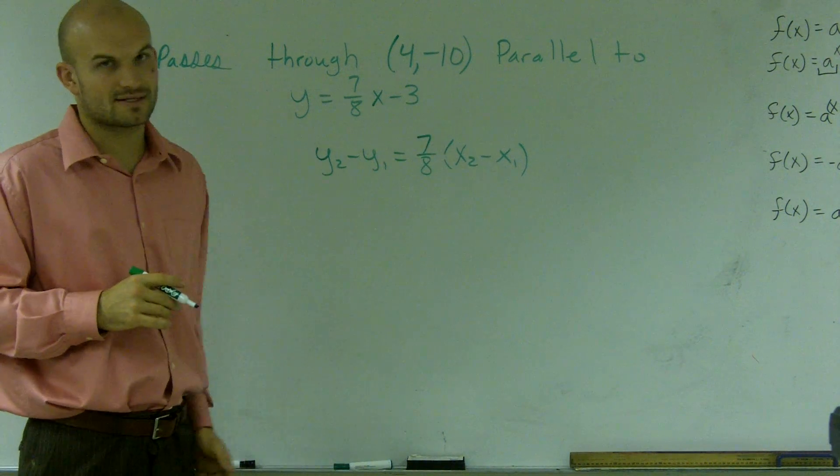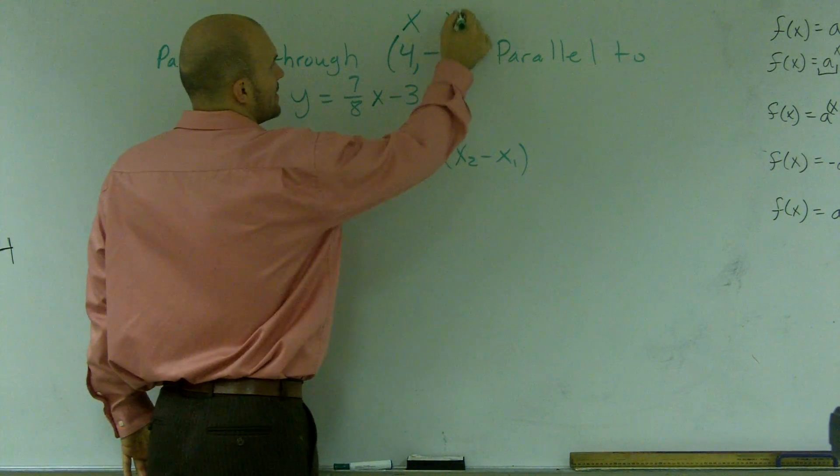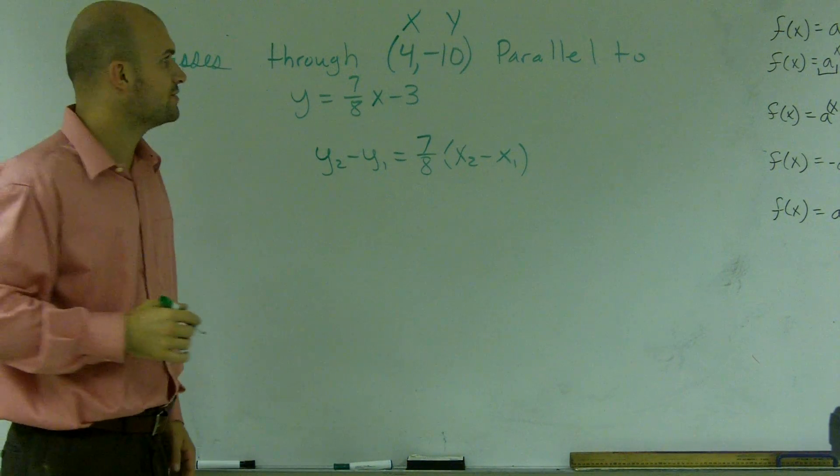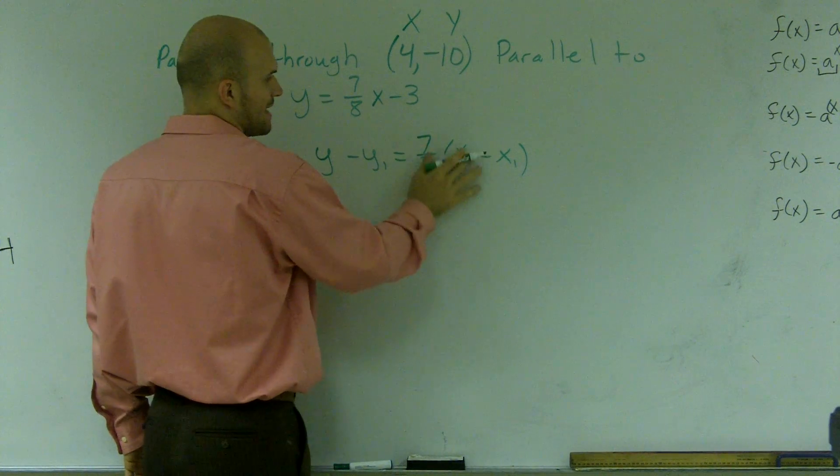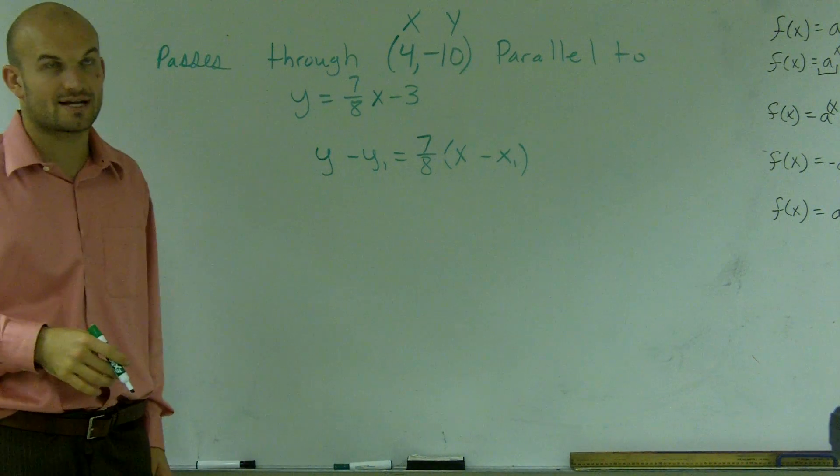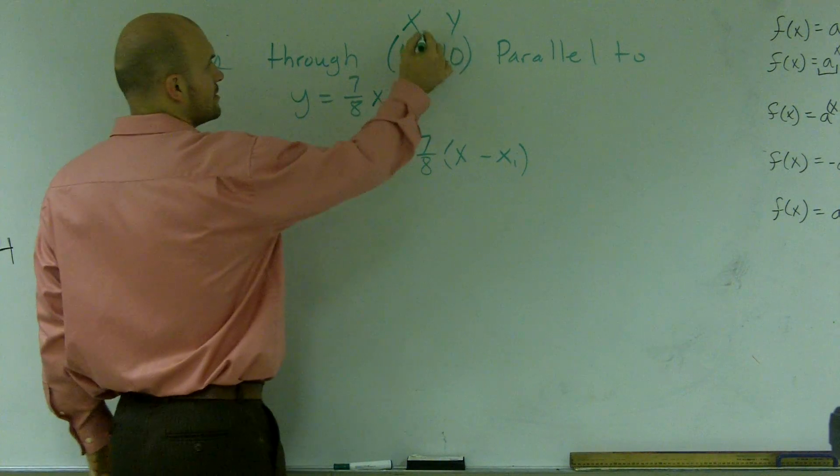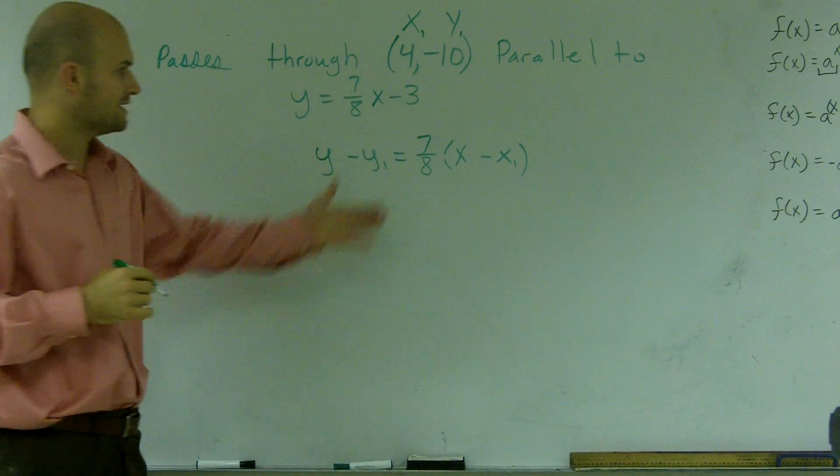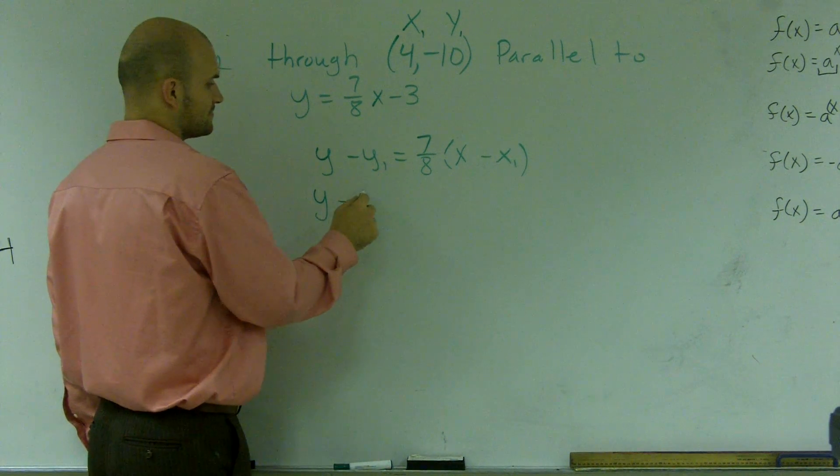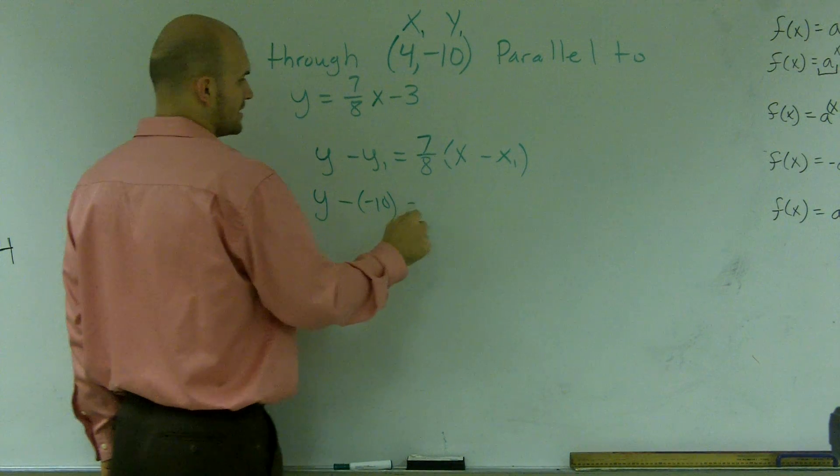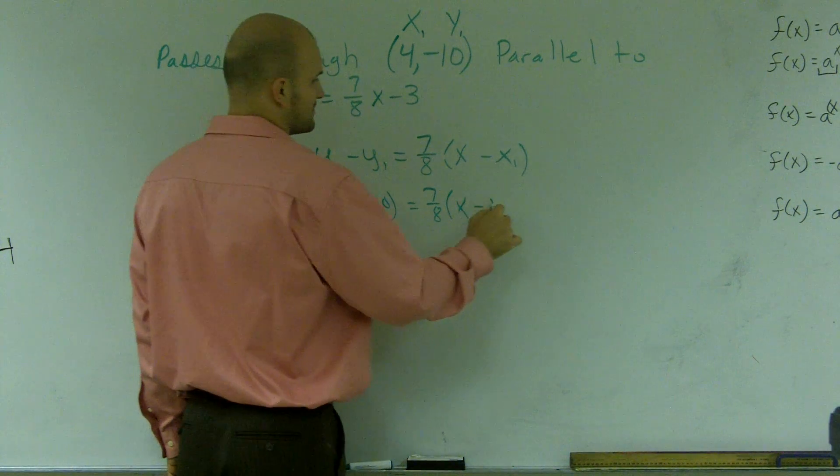Then I have two y's and I have two x's. Well, I don't have two y's and two x's. I only have one x and one y. So what I'm going to do is just use these and erase my y2 and my x2. And now what I'm going to do is just plug in my x1, y1 into this equation. So I get y minus negative 10 equals 7/8 times x minus 4.